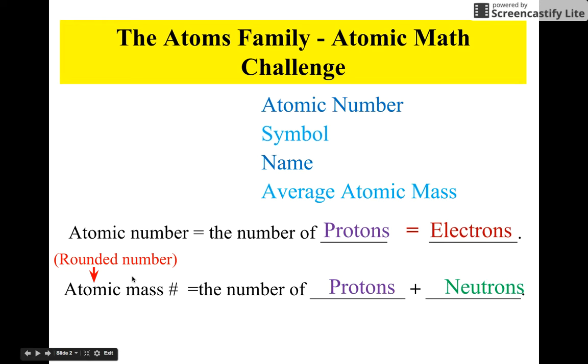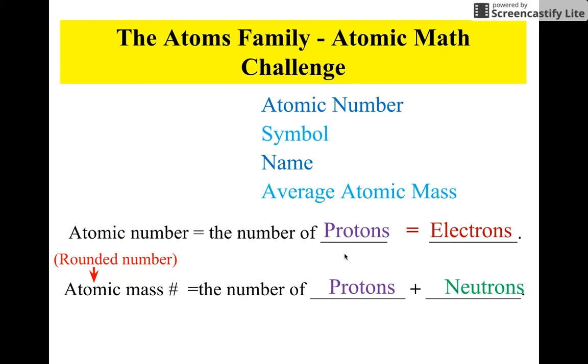Now, to find the number of neutrons, we're going to subtract the atomic mass minus the number of protons. In this case, to find the atomic mass, we add the number of protons and the number of neutrons together. So it depends on what information we want to find.